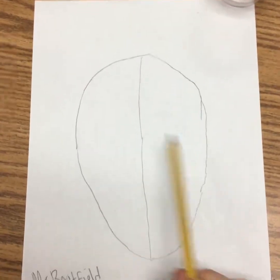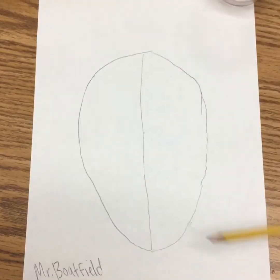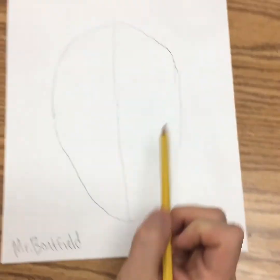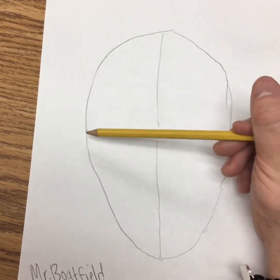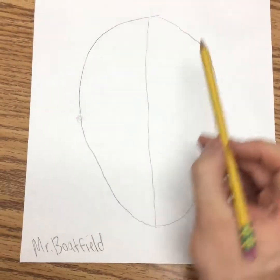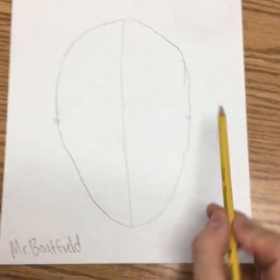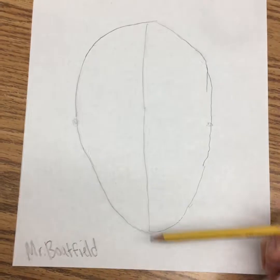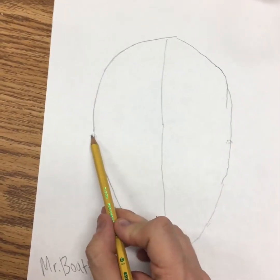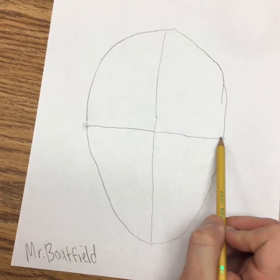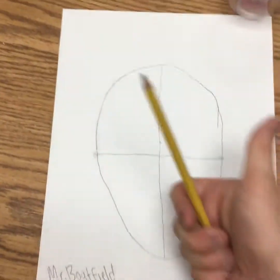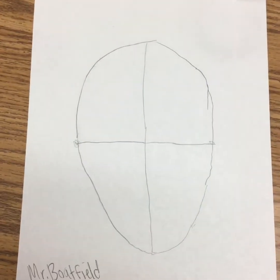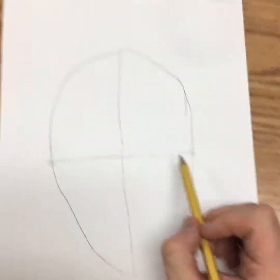We split our face into two different parts — in fractions, we call those halves. Now it's time to split our face into fourths. Find about the middle of this vertical line and put a little dot to help remind you, then draw a straight horizontal line across — making kind of a plus sign. Go ahead and do what looks like a plus sign on your face, then give me a thumbs up.